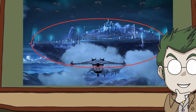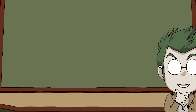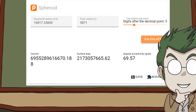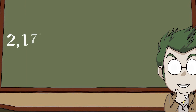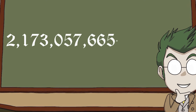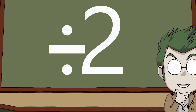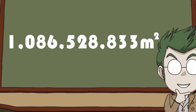After feeding it the numbers, it gives us a surface area of 2,173,057,662.62 meters squared. Which, if we divide by 2 because we're only using the bottom half, gives us 1,866,528,833 meters squared. Now we can work out fluid drag.